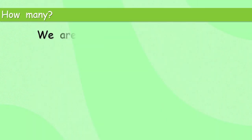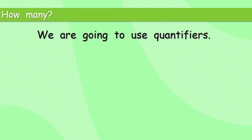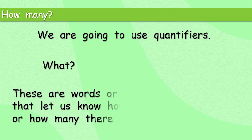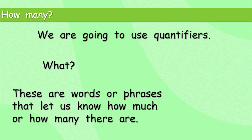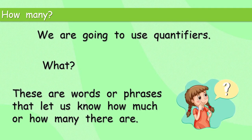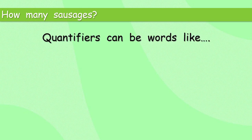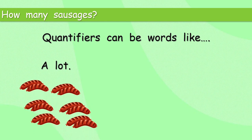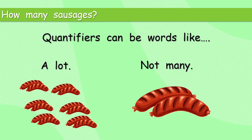So we are going to use quantifiers. What? Quantifiers. These are words or phrases that let us know how much or how many there are — but they're not numbers. No numbers this week. So, how many sausages? Quantifiers can be words like 'a lot' or 'not many'. Each time, we've not counted them — we've just got a good idea of how many there are.